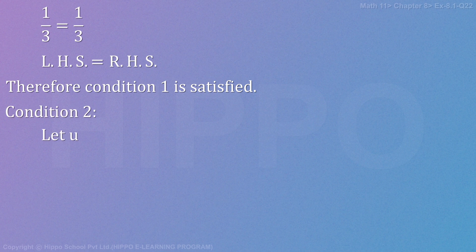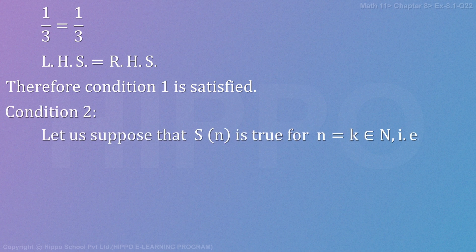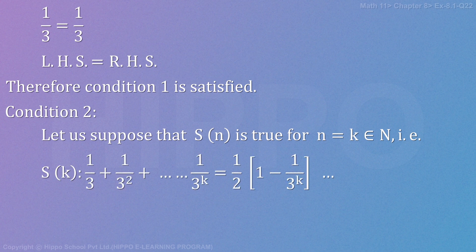Condition 2: Let us suppose that S(n) is true for n = k, where k belongs to the natural numbers. So S(k) is such that 1/3 + 1/3² + ... + (1/3)ᵏ = (1/2)[1 - (1/3)ᵏ], which is equation number 1.